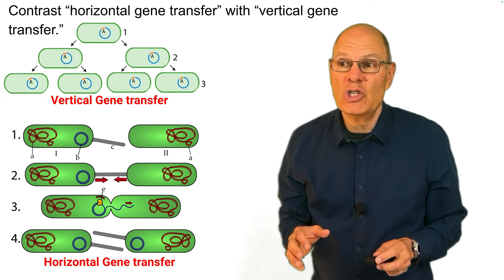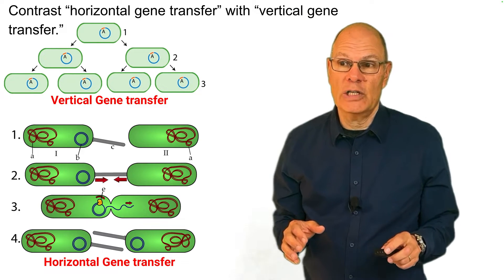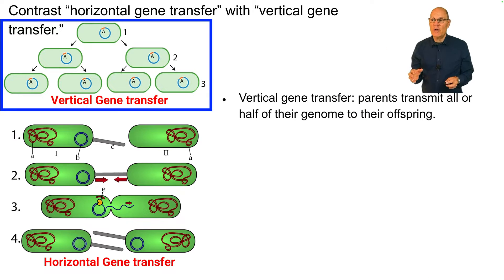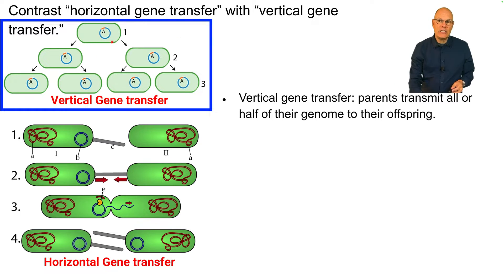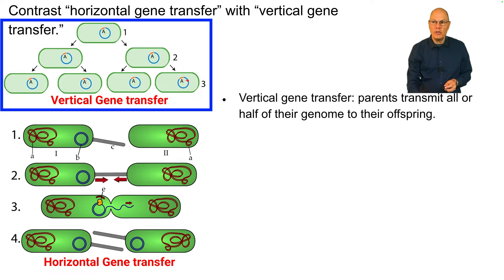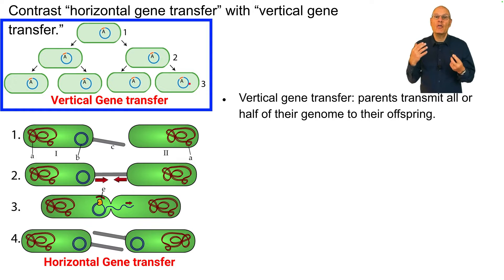Contrast horizontal gene transfer with vertical gene transfer. In vertical gene transfer, parents transmit all or half of their genome to their offspring. Here's a bacterium reproducing, and in this generation all of the genes have been transmitted, and in the next generation all of the genes have been transmitted. You inherited your genes from your parents through vertical gene transfer.